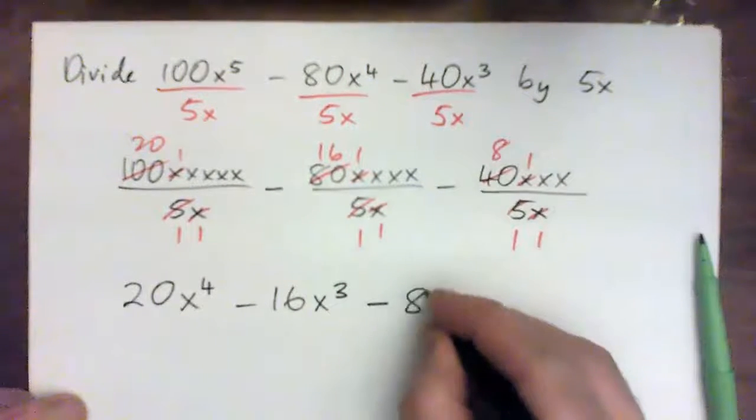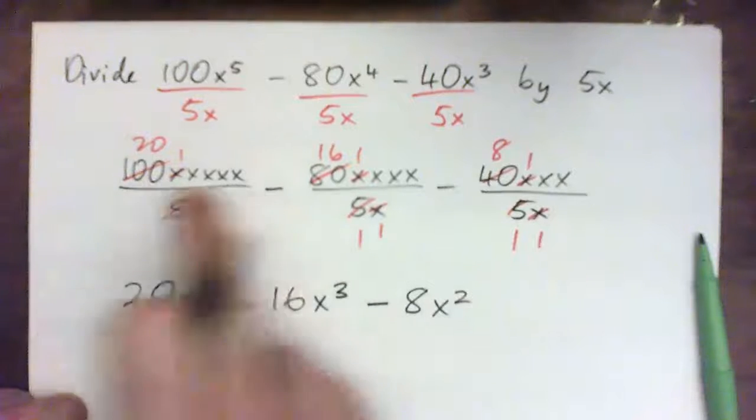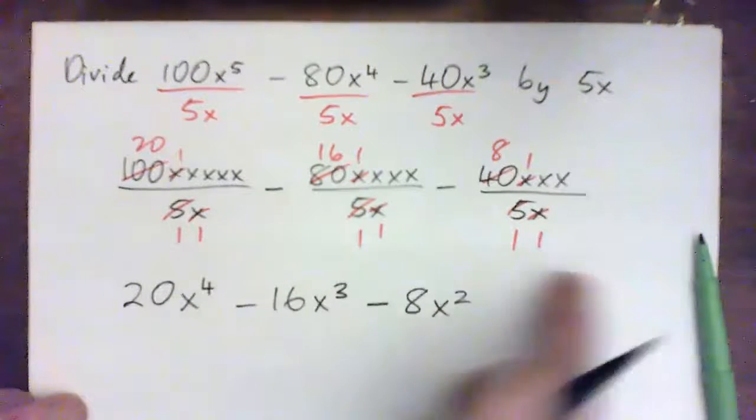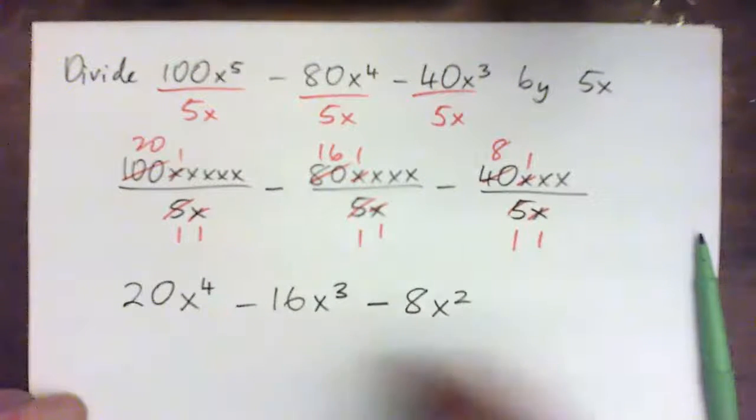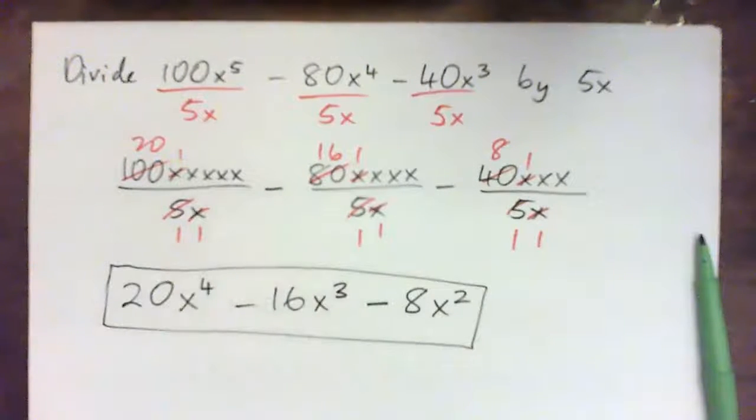And then we have an 8, and 1, 2 x's, x to the power of 2. And all of these were over 1, so they're just all over 1, and that's our answer there. Lovely.